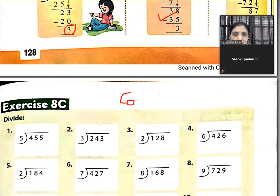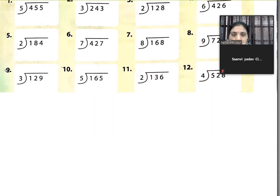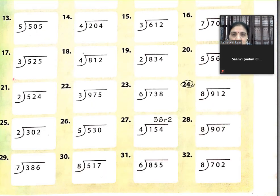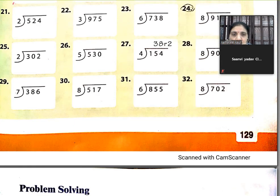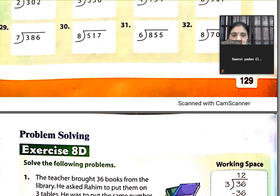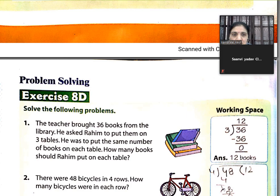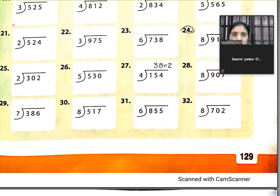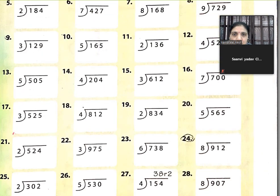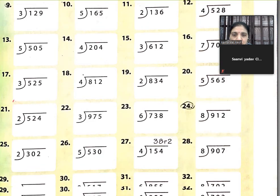Now this exercise, exercise 8c will be done in your copy. There are 32 sums which you have to do in your copy. Finish these 32 sums.